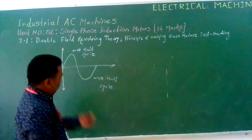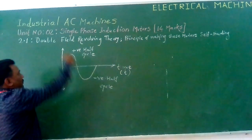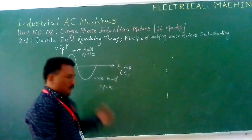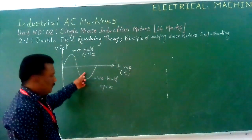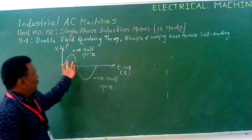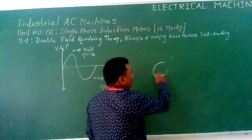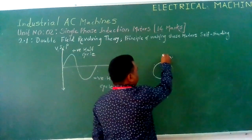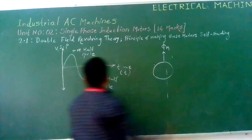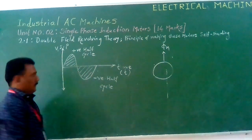Here, the x-axis represents time and the y-axis represents voltage, current, or power. Due to the single-phase supply nature, the induction motor produces torque. The flux is first created on the rotor. The total flux is φm — the flux produced in the positive half-cycle and the negative half-cycle.